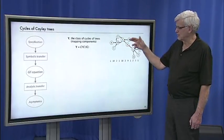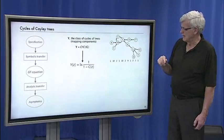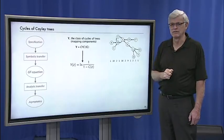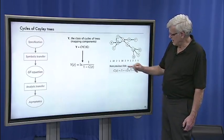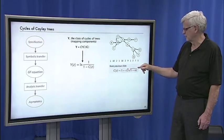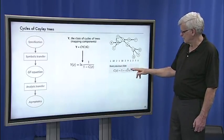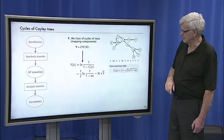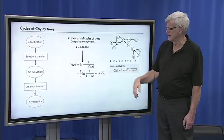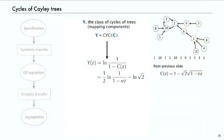And so we can make use of that approximation later on in the analysis. So for example, we want to know the number of cycles of trees. That's the components in a mapping. The generating function equation we get is immediately log of 1/(1-C(z)). But the last slide, C(z) is asymptotic to 1 - √2·√(1-ez). One minus that is √2·√(1-ez). So that comes out to ½log(1/(1-ez)) - log√2. Just plugging that in.